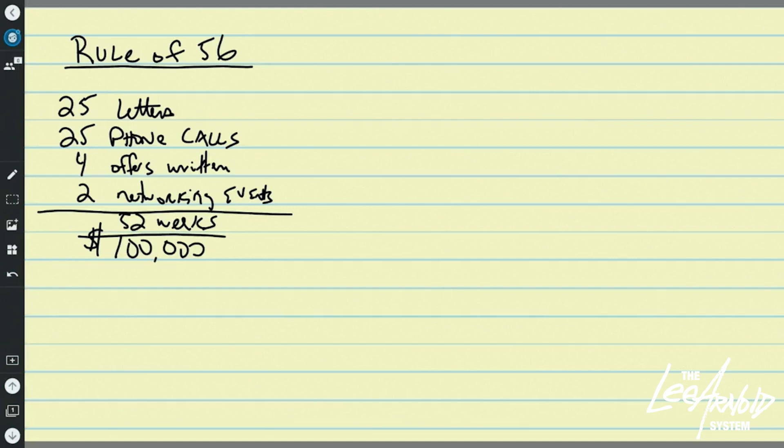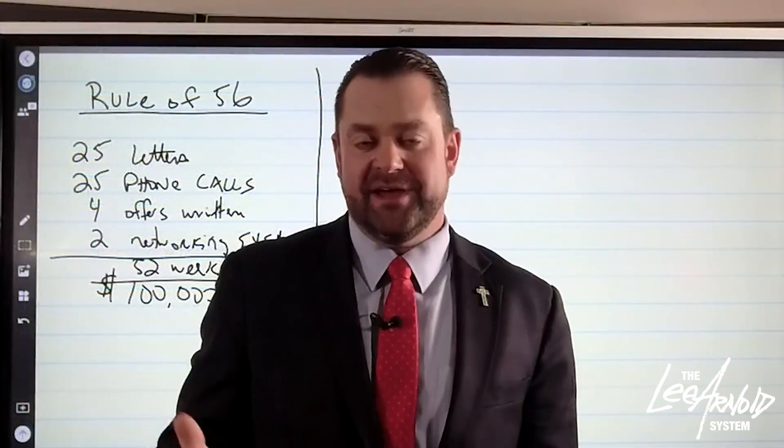Now, I had an interesting question the other day. They said, Lee, we love the rule of 56. It makes sense. It's KPIs that we can track and we can follow, but we want to generate more than $100,000 a year in income. So how do we do that?